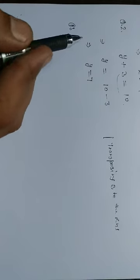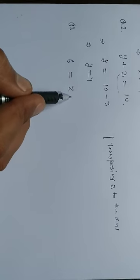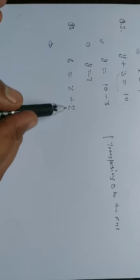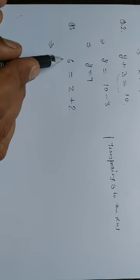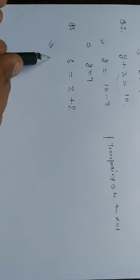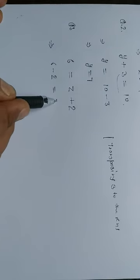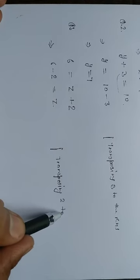Question number 3: 6 is equal to z plus 2. We have to find the value of z. Transposing plus 2 to the left hand side, it becomes minus 2. So 6 minus 2 is equal to z, which means z is equal to 4. This is the answer.